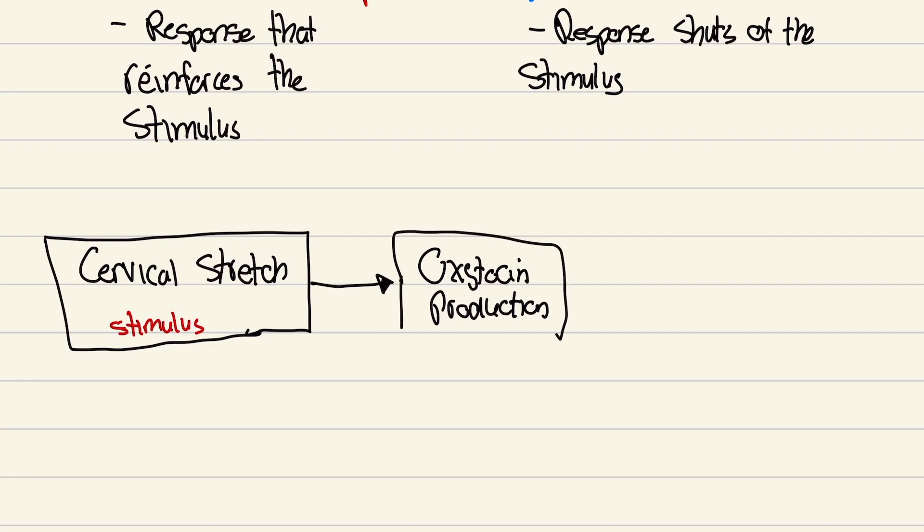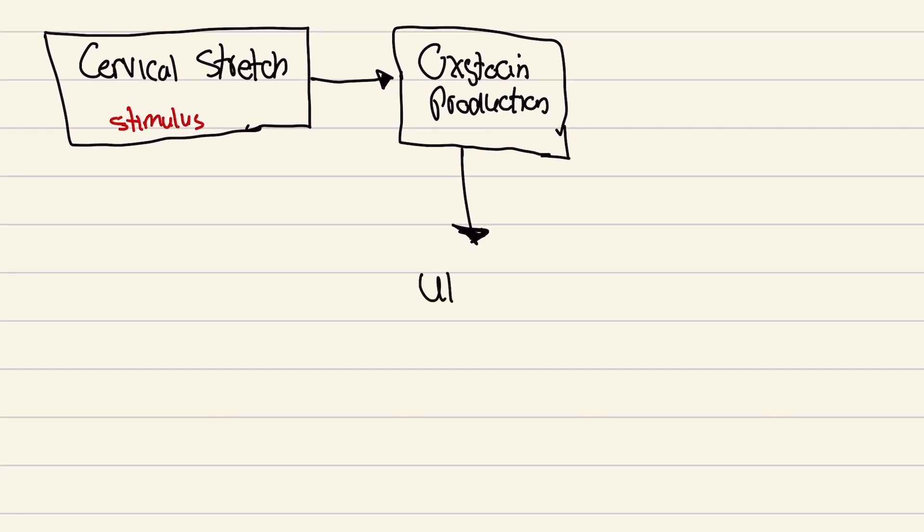Oxytocin production causes uterine contractions, more forceful contractions, more rapid.